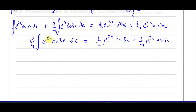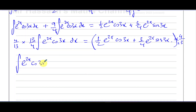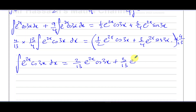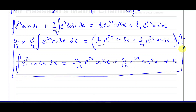Now I multiply both sides by 4/13 to isolate the integral. On the left the 13/4 and 4/13 cancel. On the right: (4/13) × (1/2) = 2/13, and (4/13) × (3/4) = 3/13. So the integral of e^(2x)·cos(3x) dx equals (2/13)e^(2x)·cos(3x) + (3/13)e^(2x)·sin(3x) + k. That's the answer, with p = 3/13 and q = 2/13.